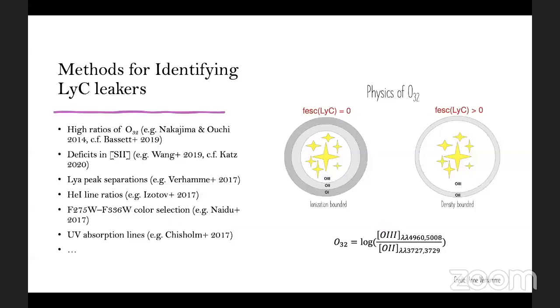There's a number of different methods for identifying Lyman leakers. A bunch of them are listed here on the left. One of the most popular methods is looking for galaxies which have a high ratio of O32. And you can see that's, as we define it, a log quantity of a bunch of oxygen 3 emission lines divided by a bunch of oxygen 2 emission lines.